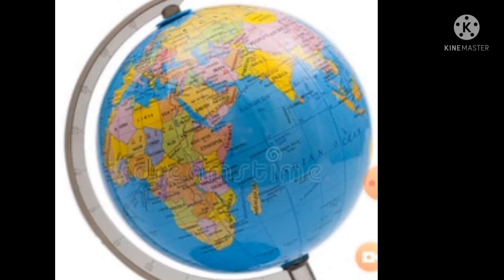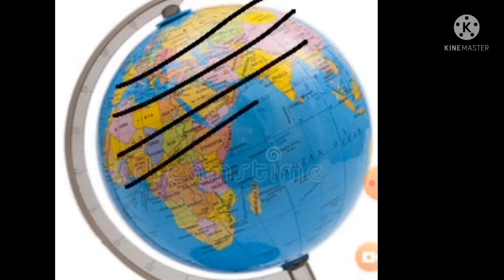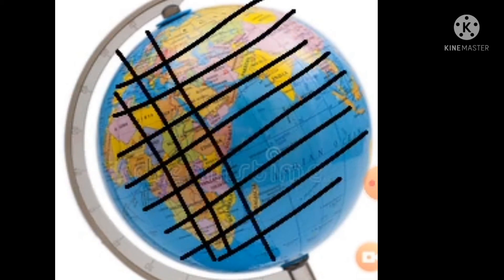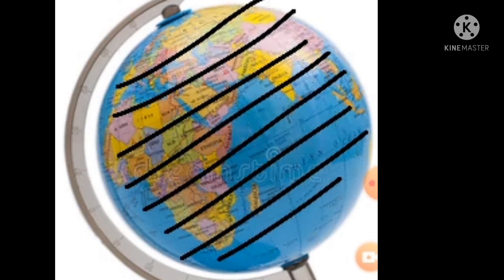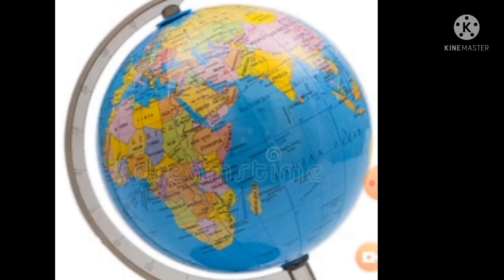Next — global grid. The latitude and longitude on the globe or map form the grid. Grid means 'jali' — a net-like pattern. The network formed by the intersecting lines of latitude and longitude is called the global grid. So in simple terms, the latitude and the longitude on the globe or map form the grid. You have now learnt about latitude, longitude, equator, prime meridian, and global grid.